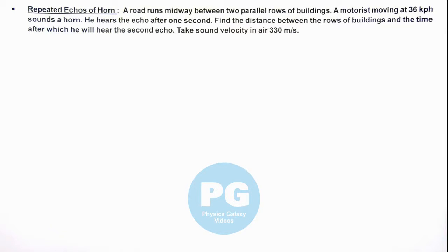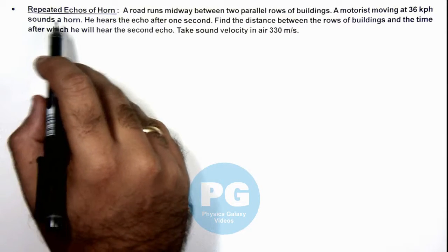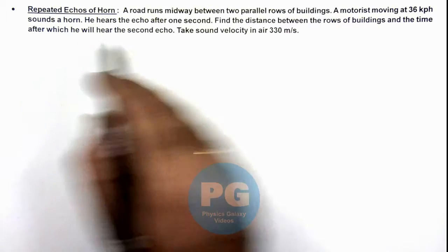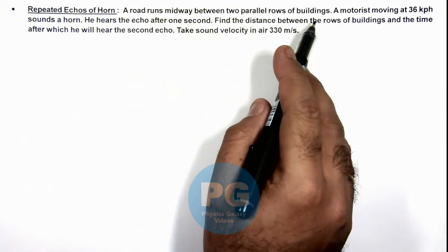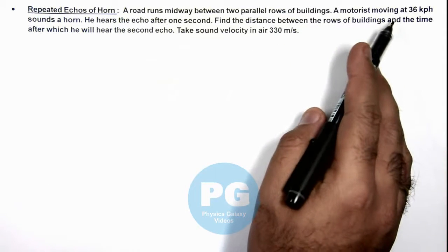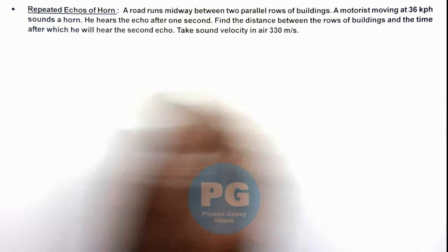In this illustration, we'll analyze the repeated echoes of a horn. It is saying a road runs midway between two parallel rows of buildings, and a motorist having a speed of 36 kilometers per hour sounds a horn.